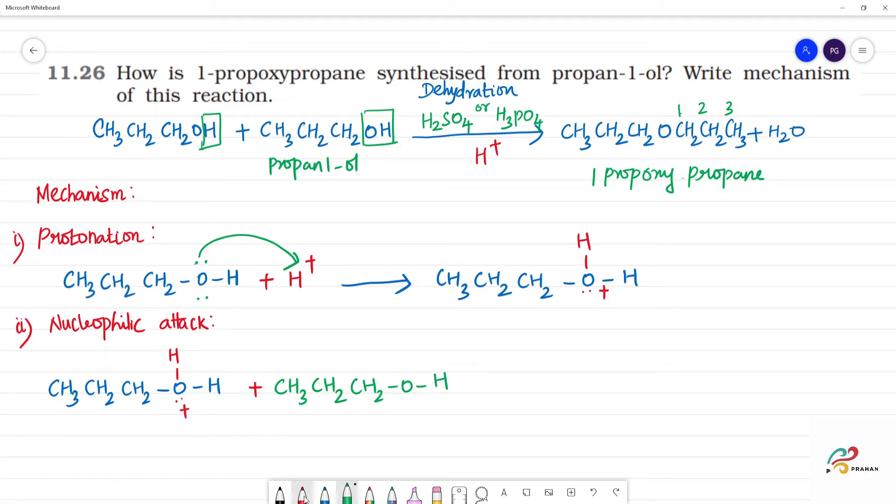What happens? This bond breaks and H is removed. This molecule is removed. This oxygen's lone pair of electrons is the nucleophile. This lone pair of electrons attacks. Nucleophilic attack: CH3-CH2-CH2 (this is plus) and the oxygen will attack carbon CH2-CH2-CH3.